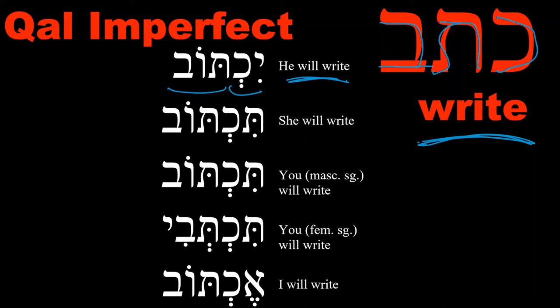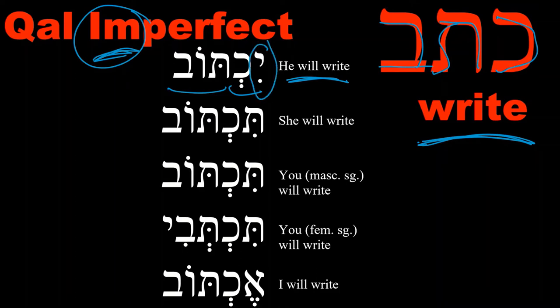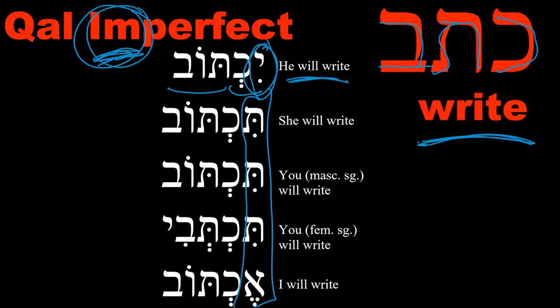Now, before we go too far, we want to note two things. First, when we have the imperfect, notice that we put a prefix in front of the word — just as 'im-' is a prefix in English 'imperfect.' This is a visual reminder of the pattern: a prefix is added to the front of our verbal root. In the perfect — the past, the completed action — we would not have this prefix. So we're looking at the prefix yod. If you go down the whole list, notice there's always going to be this prefix added to the front of the verb, reminding us of the imperfect: it's not a completed action.